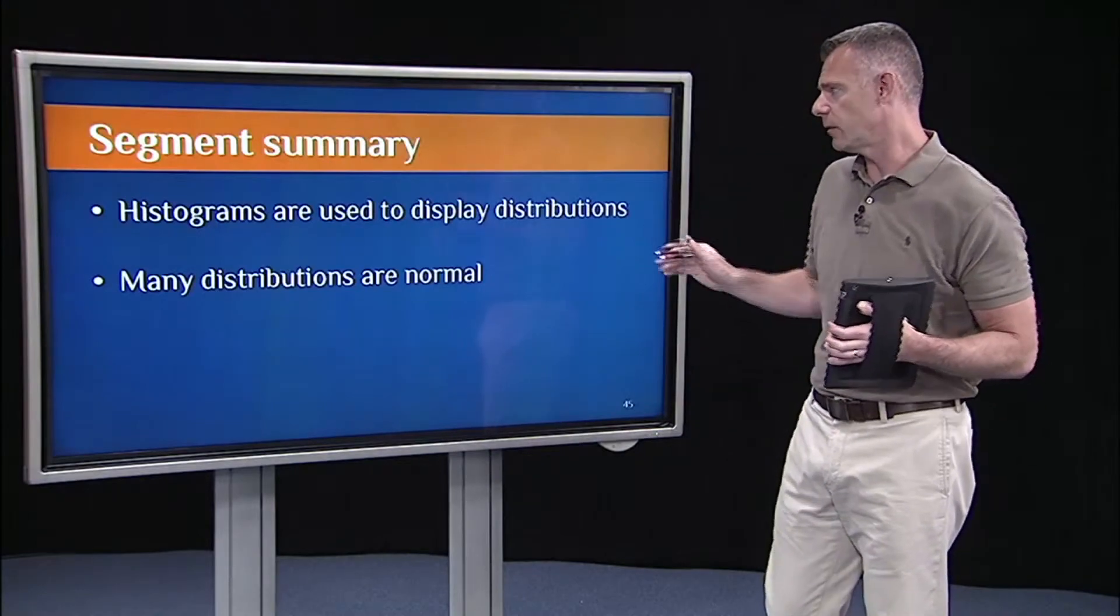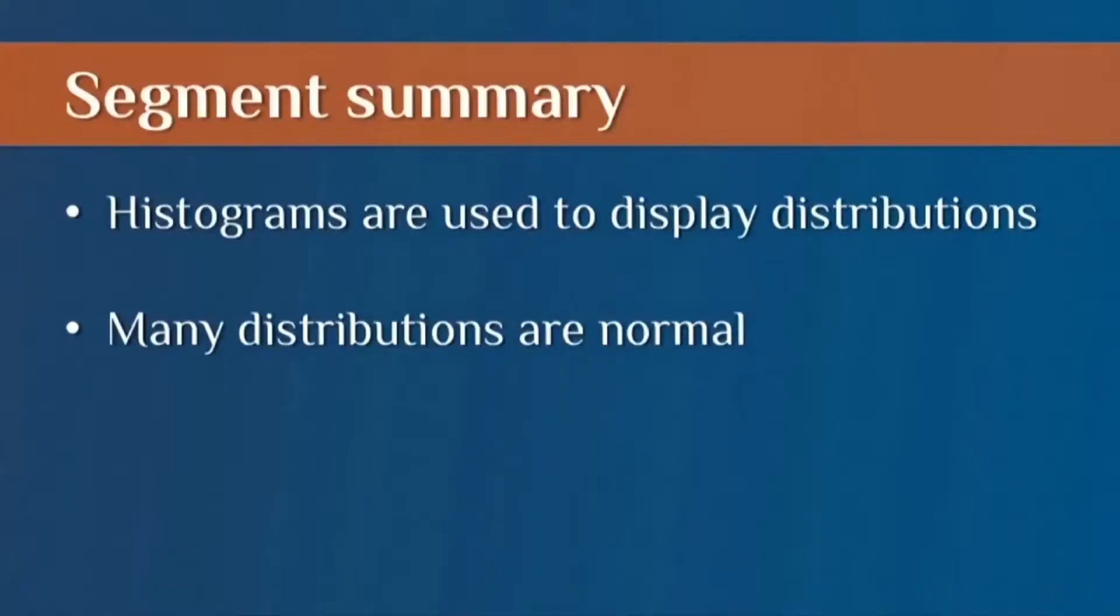So, to summarize this segment, we use histograms to display an entire distribution because they sometimes reveal information that summary statistics gloss over or won't tell us. And many, if not most, distributions that we deal with are going to be normal.